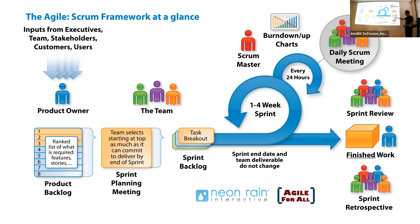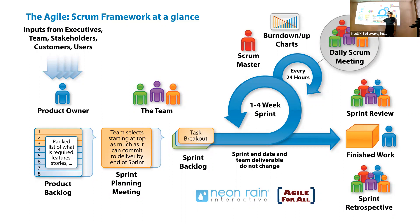Once the product is complete and released to production, the team sits down with the customer and stakeholders in the sprint review. They demo what was built, get feedback, and customers may come up with additional features or requirements. That goes back to the product owner who documents it in the product backlog. Next Monday, the team again picks high-priority items to deliver over the next two weeks.